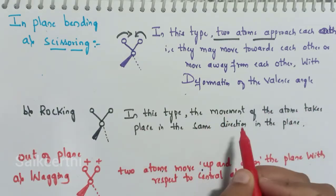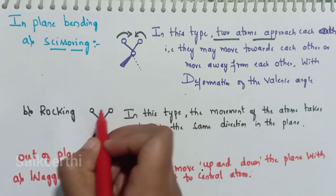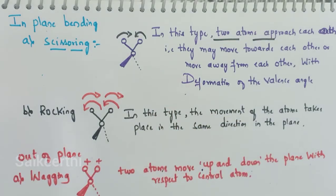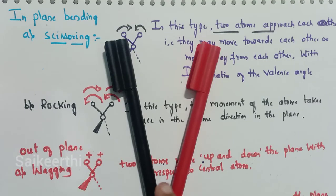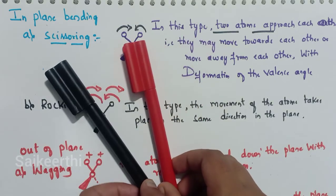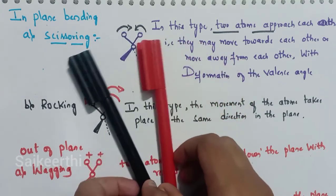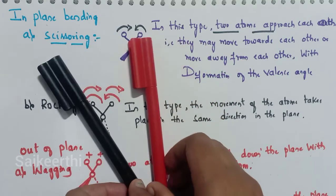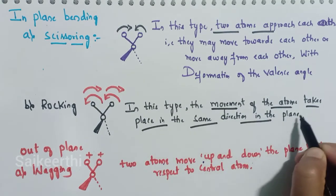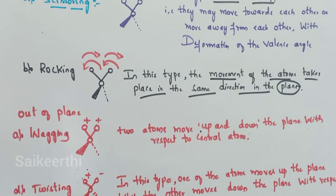In rocking, the movement of atoms takes place in the same direction in the plane. If one atom moves to the right, the other atom also moves to the right. Scissoring and rocking are in-plane bending vibrations — the atoms are on the plane and do not move above or below it.